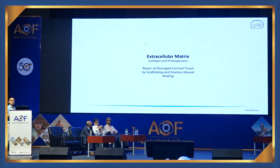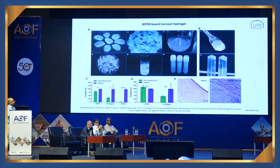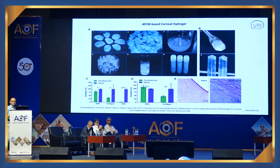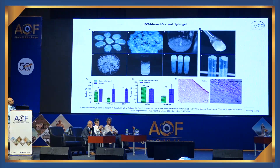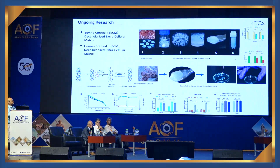We are also working on the extracellular matrix — trying to create biological substitutes for it. This is work on what we call decellularized extracellular matrix (dECM). We take different tissues, break them down into a powder preserving only the extracellular matrix, and make hydrogels from that matrix so they retain the original components. You can use any source tissue, mix it with different components to form a semi-solid gel, and use that gel for corneal regeneration — what we call a dECM-based corneal hydrogel.